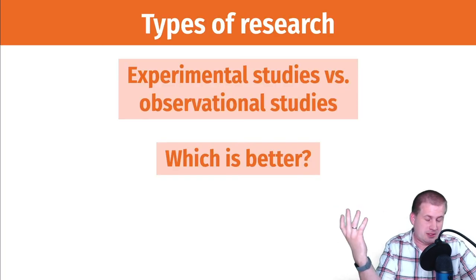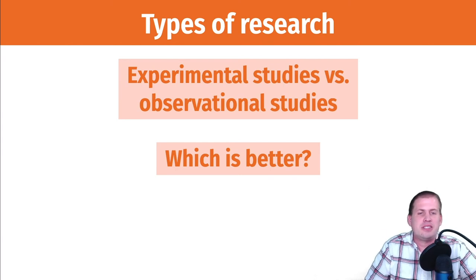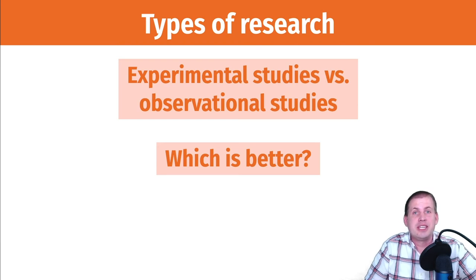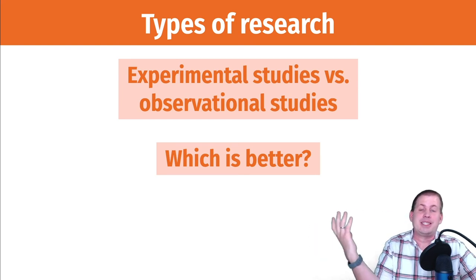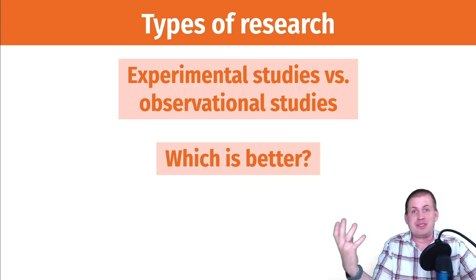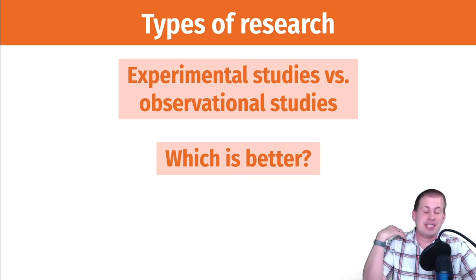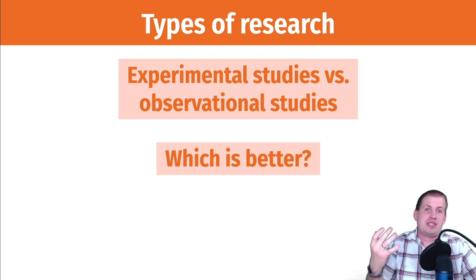As a quick review from past sessions: there are different ways of researching things. You can have experimental studies, which are based on random trials, and observational studies, which are based on data collected in the wild — for example, data collected by a government agency. The census is an observational study. Basically any dataset that doesn't come from an experiment is an observational study.